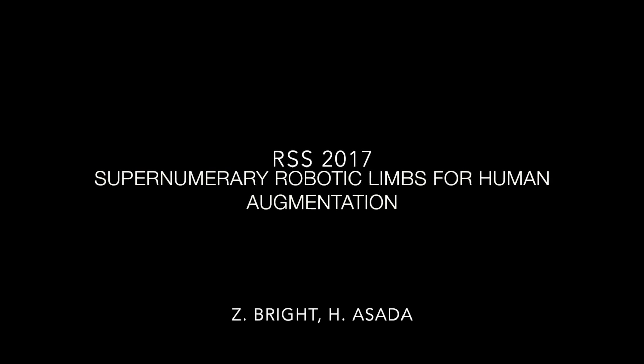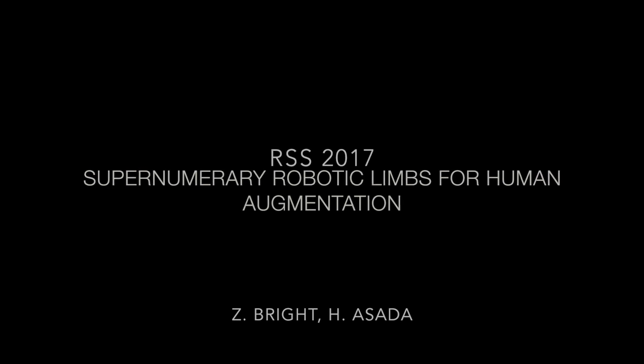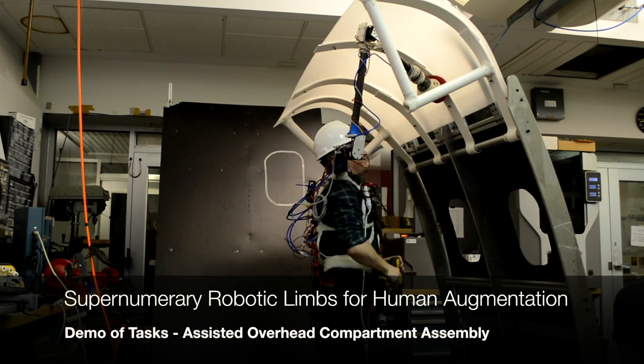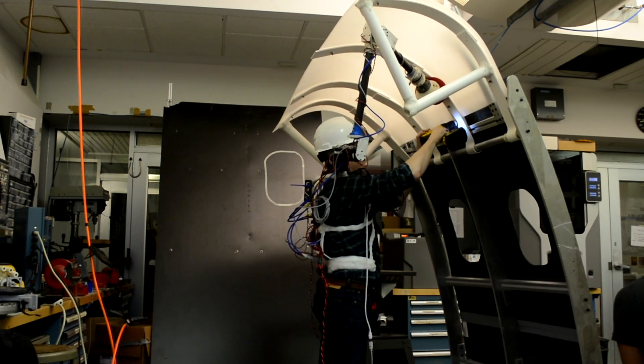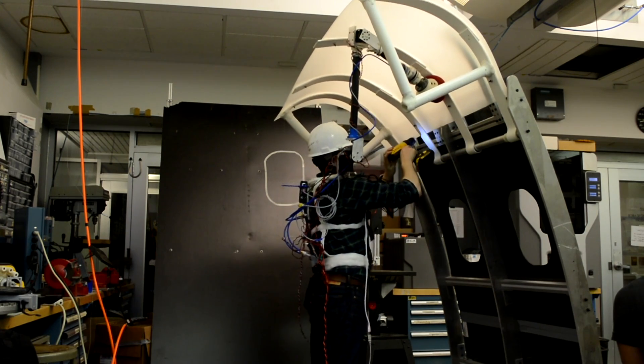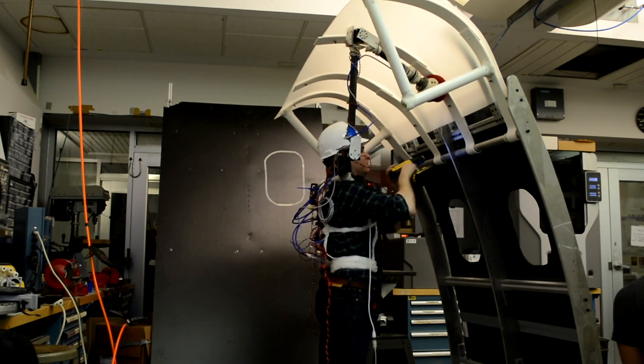We introduce a novel design of Supernumerary Robotic Limb, or SRL, an extra shoulder-mounted robotic arm designed to augment the wearer for manufacturing tasks and related activities. Here we demonstrate a practical use case in aircraft manufacturing, assembling an overhead compartment inside the aircraft fuselage.